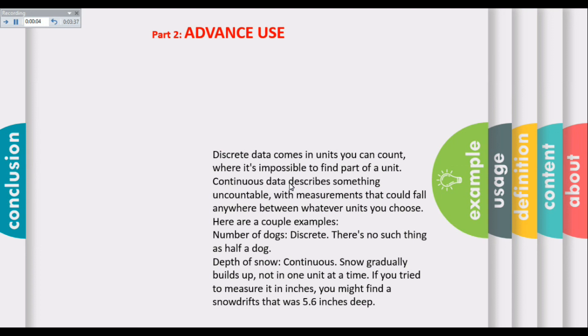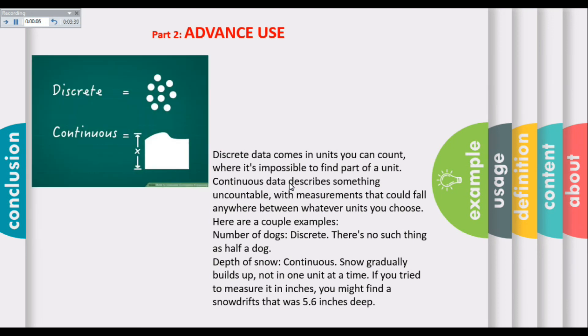Moving toward the advanced use. Discrete data comes in units you can count, such as number of dogs. Continuous data describes something uncountable, such as depth of snow, as snow gradually builds up, not in one unit at a time.